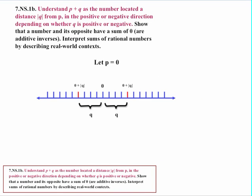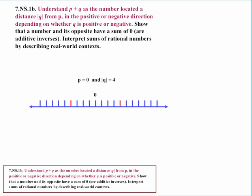Now let's look specifically at 7.NS.1B. Understand p plus q as the number located at a distance absolute value of q from p, in the positive or negative direction depending on whether q is positive or negative. Let's take the simplest example where p equals 0. When talking about p plus q, q could be a distance of q in the positive direction, or it could be a distance of q in the negative direction from that starting point. If p is 0 and the absolute value of q is 4, we could go 4 in the positive direction to reach positive 4, or 4 in the negative direction to reach negative 4.